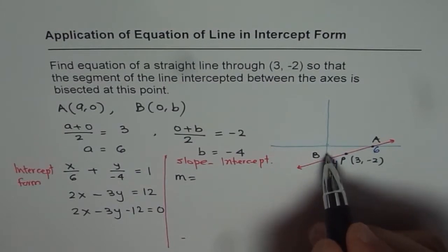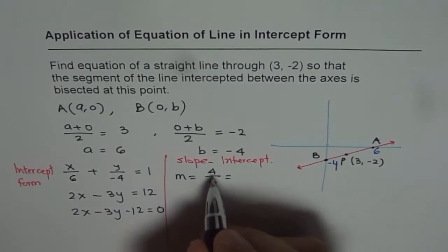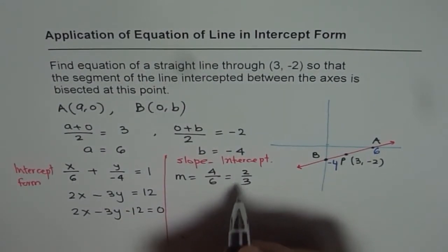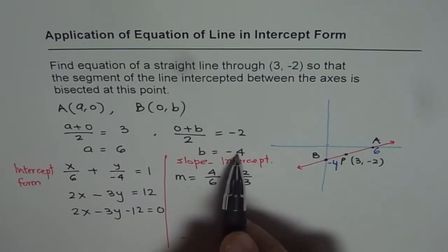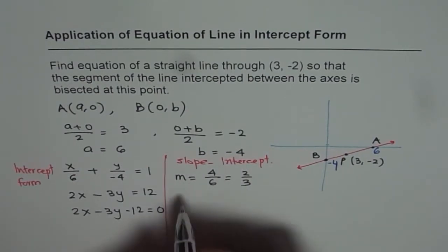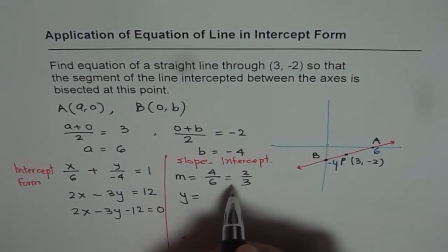Slope in this case is rise over run. Rise is how much? 4 units. You will go up 4 and run is 6. So slope is 4 over 6, which is 2 over 3. We know the slope and we know y-intercept. So we can write down the equation.